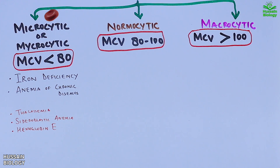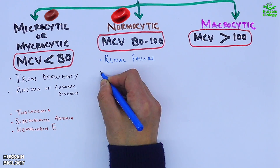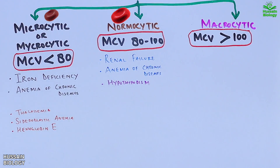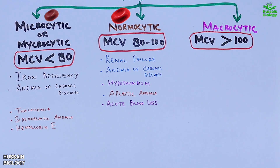In normocytic anemia, all parameters of the red blood cells are normal, but the MCV is less than normal, leading to anemia. This anemia is often caused by associated diseases such as renal failure, anemia of chronic disease, hypothyroidism, aplastic anemia, and acute blood loss.